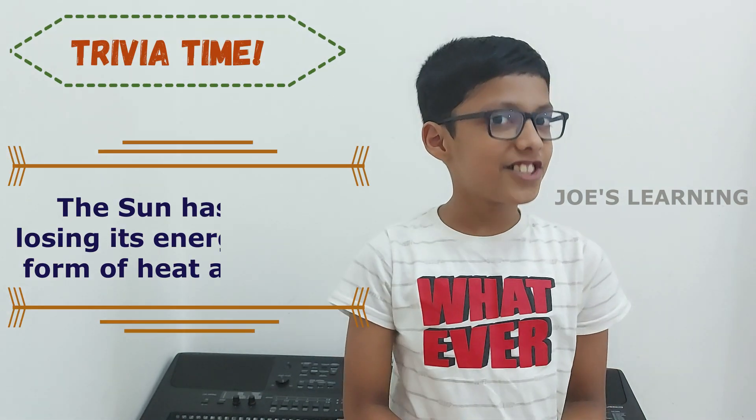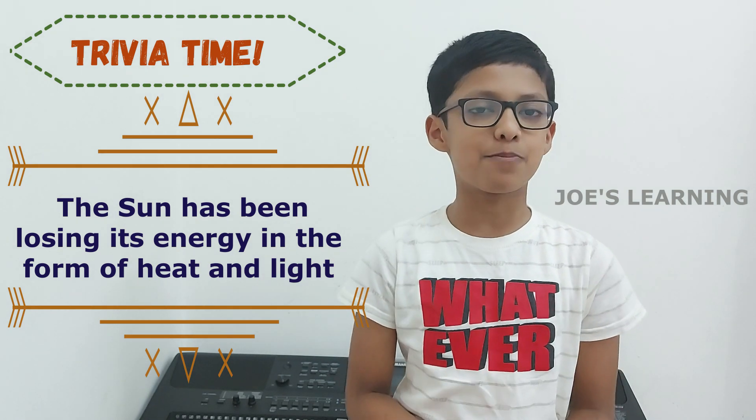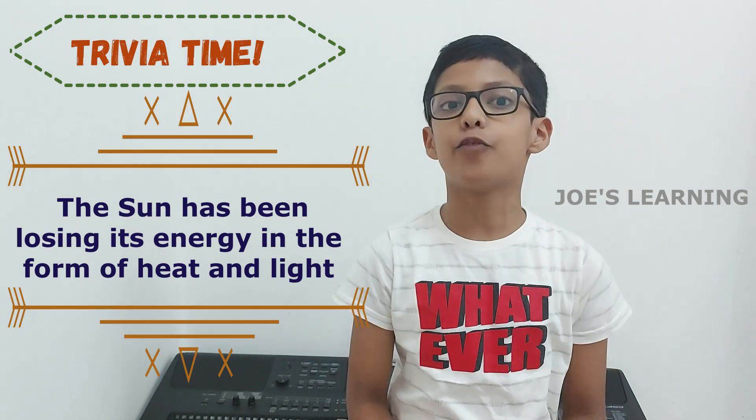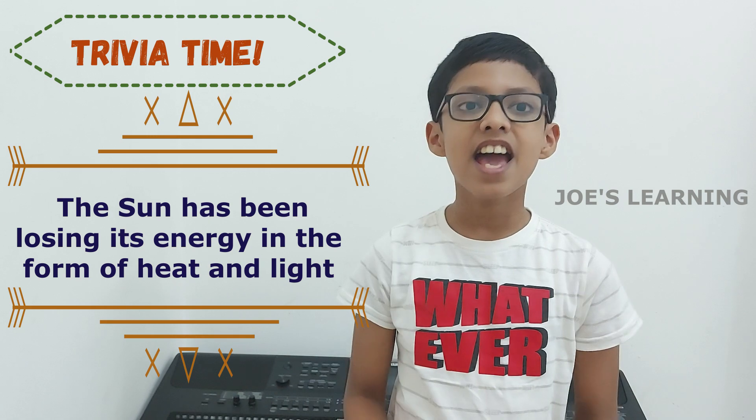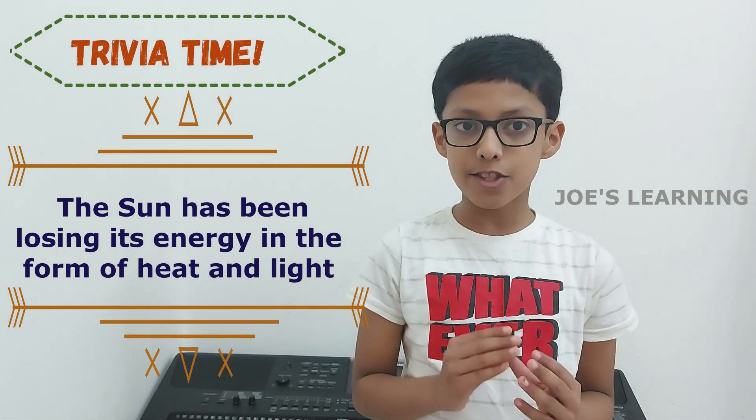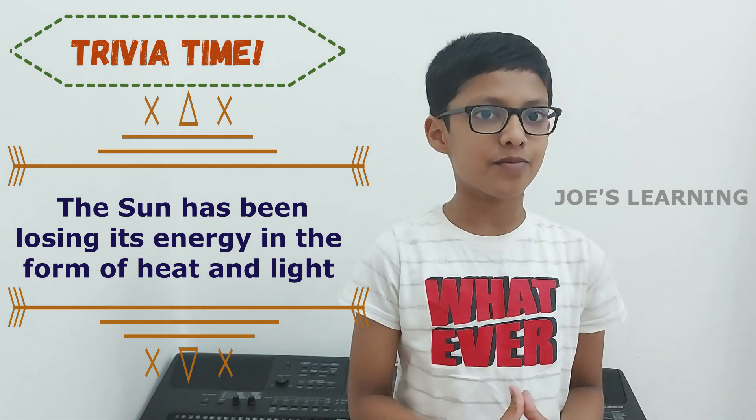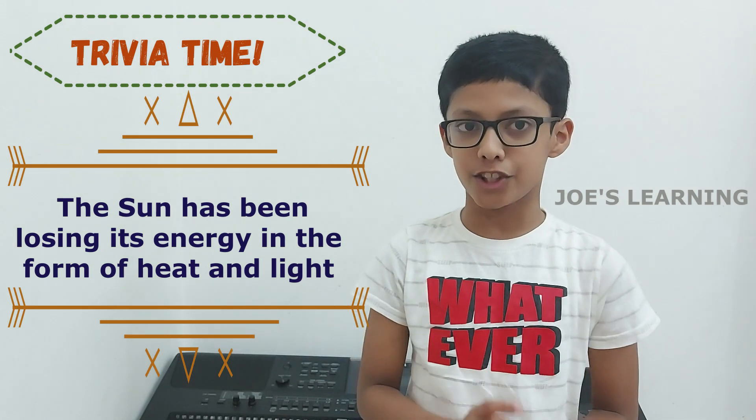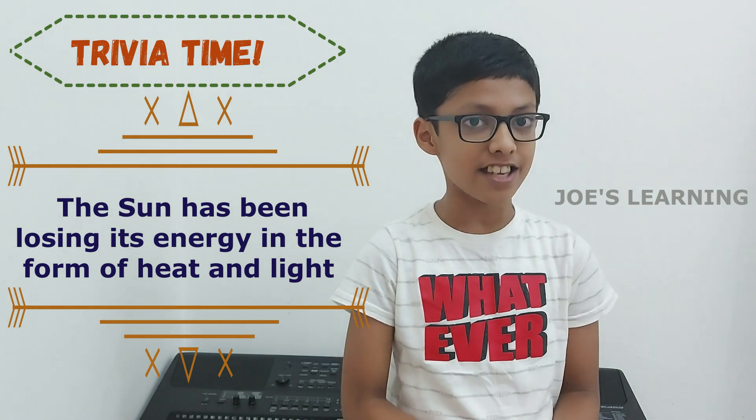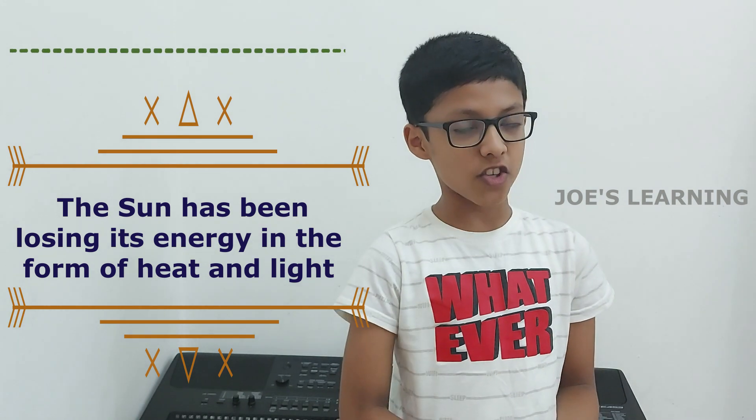Trivia time! Did you know that the Sun has been losing its energy in the form of heat and light? And due to this, it has been through nearly half its life. And it has only energy to keep it shining steadily for another 5000 million years.